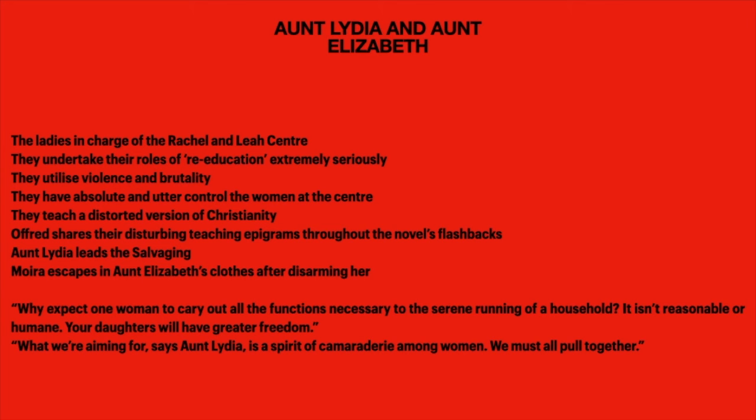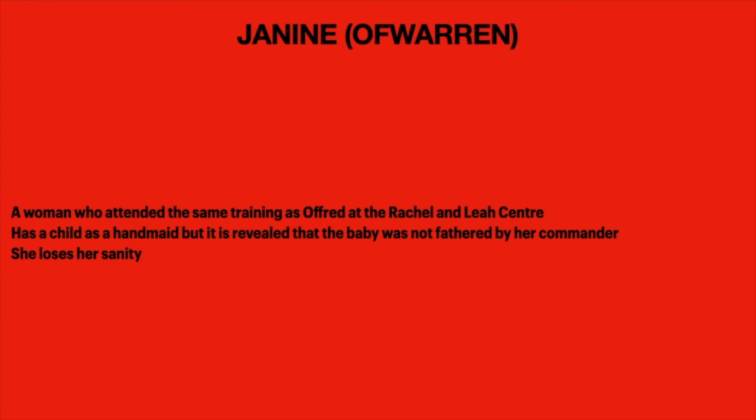Janine is a woman who attended the same training as Offred at the Rachel and Leah Center. She has a child as a handmaid, but it's revealed the baby was not fathered by a Commander — which is disgraceful in the society — and she loses her sanity. I always think of Offred as a resistor in comparison to Janine, because Offred keeps her sanity, which is really important and her key way of resisting the regime. You see the dangers of what the Rachel Center can do to someone — it can truly degrade them and take away their humanity.